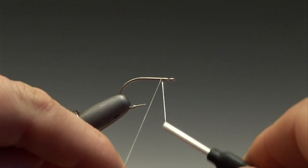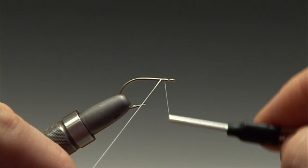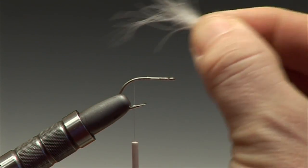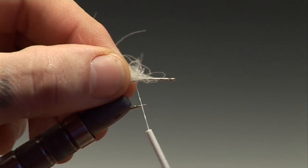Secure your shrimp hook in the vise and attach the tying thread and run it down so it hangs level with the barb.